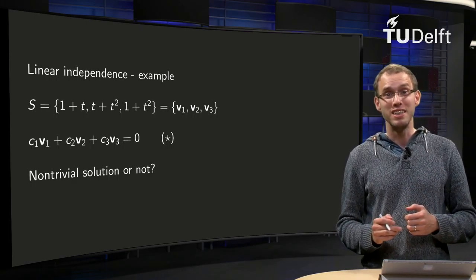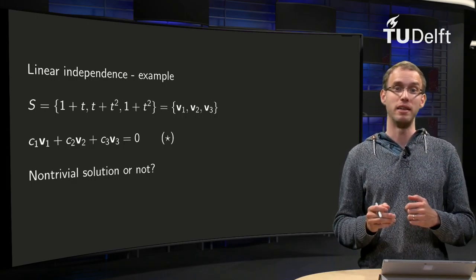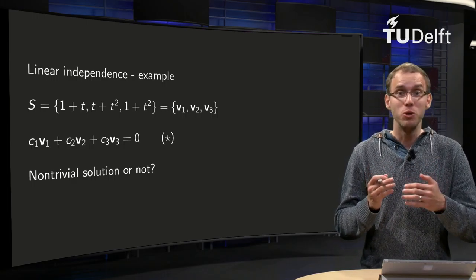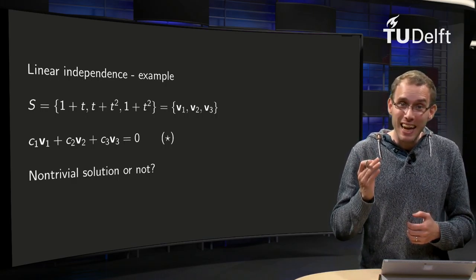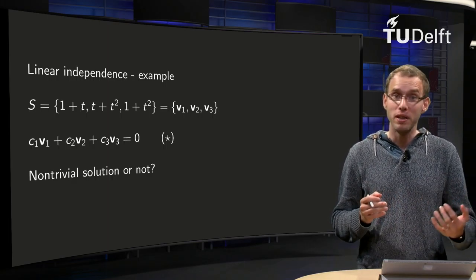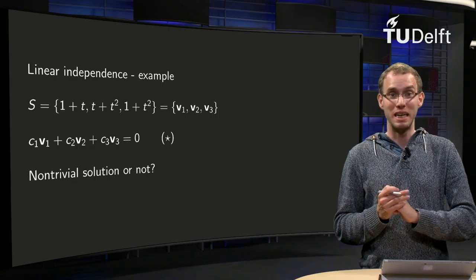If you can spot a dependence relation, you can see straight away that the set is linearly dependent. But what if you do not see such a relation? Maybe you missed it. Maybe there is no such relation, so the set is independent. So what can you do then? That is what you will learn in this video.